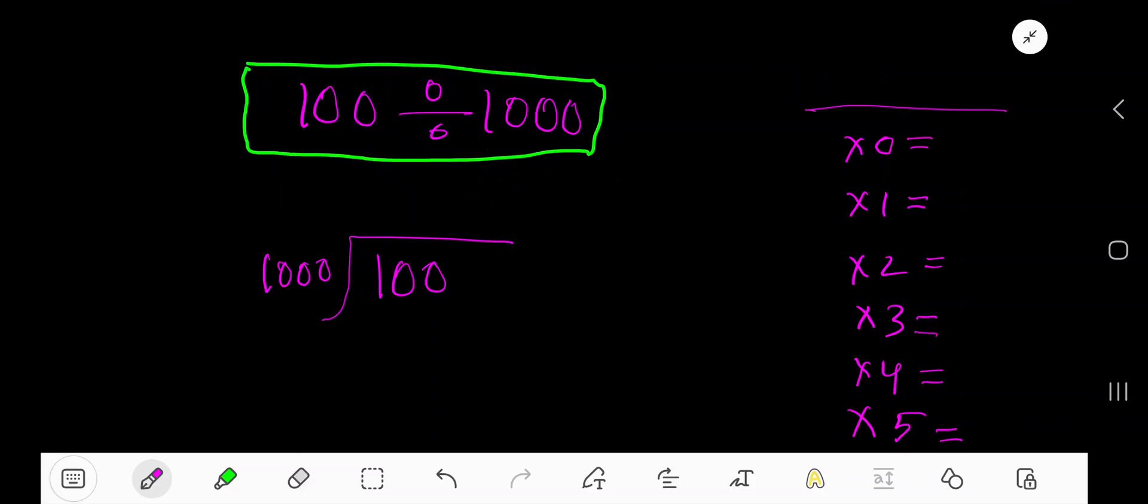100 divided by 1000. 1000 goes into 100 how many times? Actually 0 times because 100 is less than 1000. So write 0. 0 times 1000 equals 0.